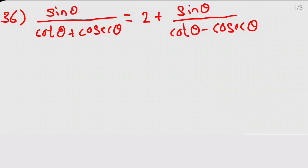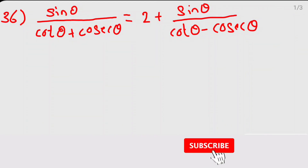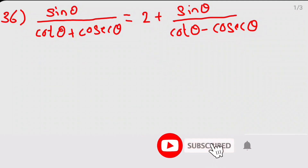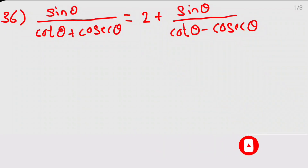Hi, welcome back students. We are discussing introduction to trigonometry applied questions. Today I am going to solve the next problem, number 36. They have given: sin θ divided by cot θ plus cosec θ is equal to 2 plus sin θ divided by cot θ minus cosec θ. I will solve both LHS as well as RHS.